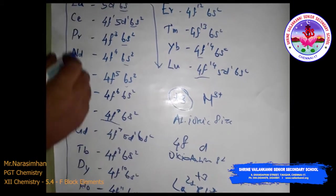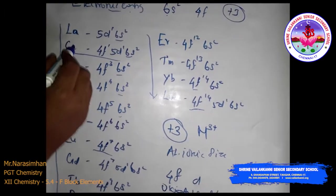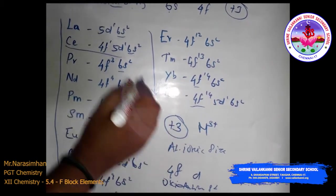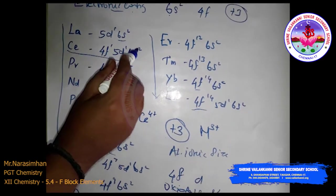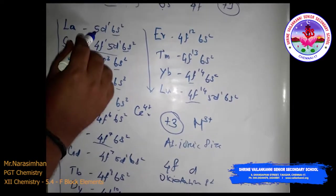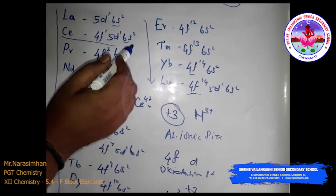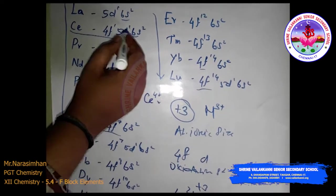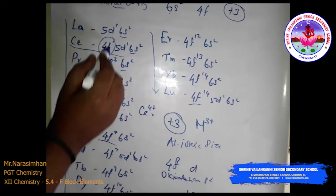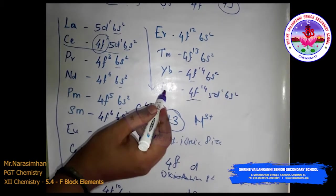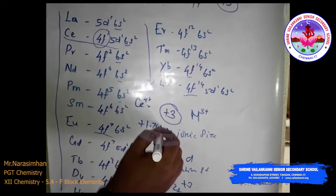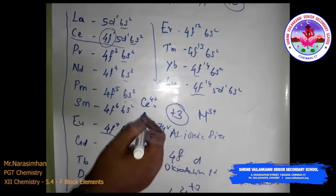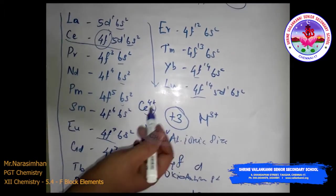For the formation of cerium(4+): cerium has configuration 4F1, 5D1, 6S2. In Ce4+, removing 4 electrons causes it to attain noble gas configuration, with all sub-shells — f, d, and s — having empty orbitals. However, Ce4+ is a strong oxidant, reverting to the common +3 state. The E° value is approximately +1.74 V, suggesting it can oxidize water, though the reaction rate is very slow. Hence, Ce4+ is a good analytical reagent.